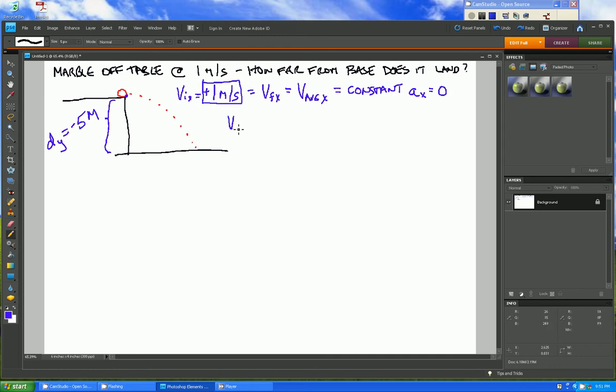We know the initial velocity in the y direction is zero. In other words, all the velocity when this marble is projected off the table is in the horizontal direction and it hasn't started to fall yet until it leaves the edge of the table. So that initial velocity in y direction is zero.